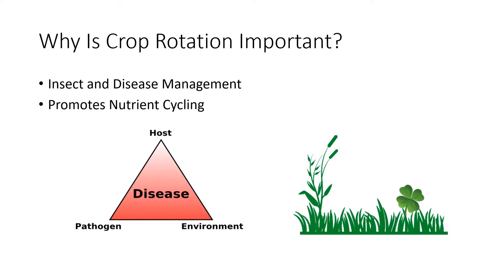Crop rotation is primarily done to control insects and diseases, but it can also help promote nutrient cycling. The idea behind moving where we plant things is to break the disease triangle. Disease can occur if we have a host plant that is susceptible to a pathogen and a conducive environment. If we remove that host plant — in our case, the strawberry crop — the pathogen no longer has a host on which to live, and we can reduce the pathogen load over time.